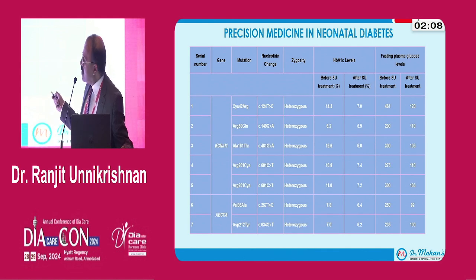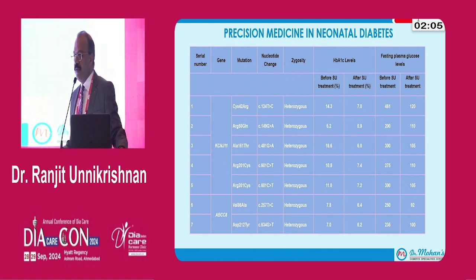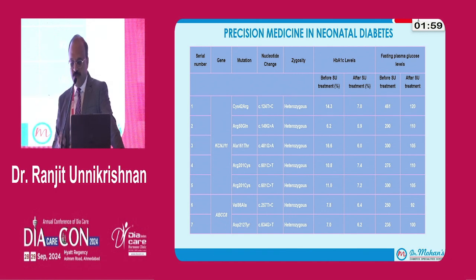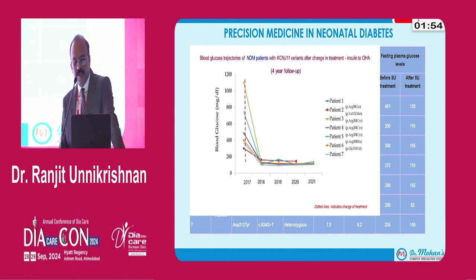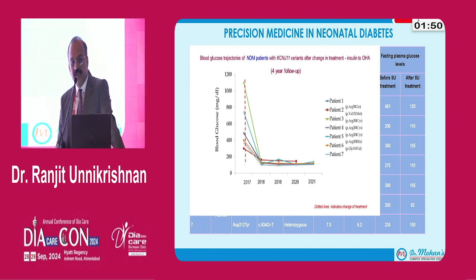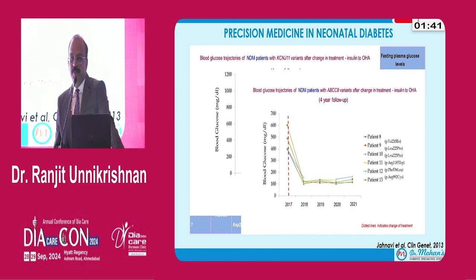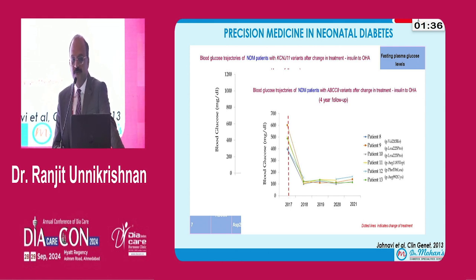The reductions in HbA1c are remarkable — from 16.6% to 6.6%, 14.3% to 7% — this sort of magical reduction you will never get in any other form of diabetes. The reduction in HbA1c is maintained over years. These are patients with KCNJ11 variants and ABCC8 variants, and data from Europe shows that the response to sulfonylurea in these patients is maintained over a period of 15 years, unlike type 2 diabetes where sulfonylureas are not a durable form of therapy.